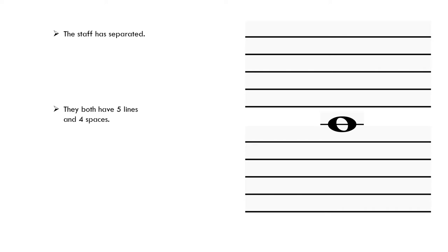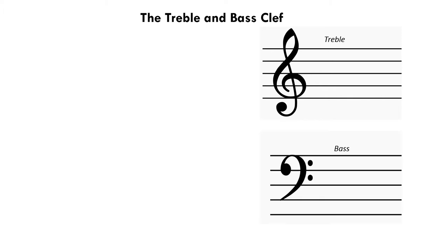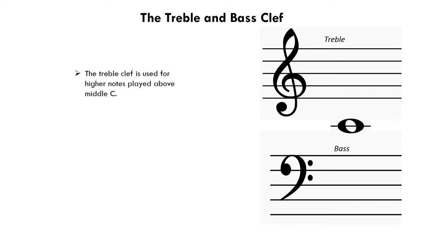Now we can add clefs to the top and bottom staff. All a clef does is indicate the notes that will be used, and I'll show you the two most common clefs. The two most common clefs are the treble clef and the bass clef. Looking back at middle C, you can see that the treble clef is above it, which is used for the higher notes played above middle C. The bass clef is below it, which is used for the lower notes played below middle C.